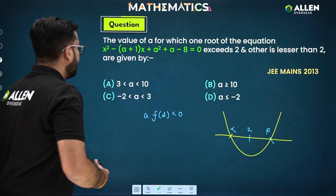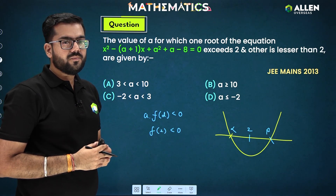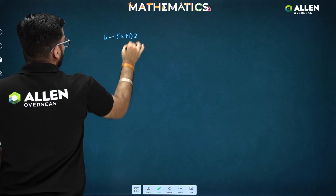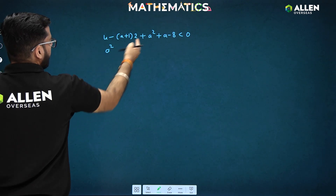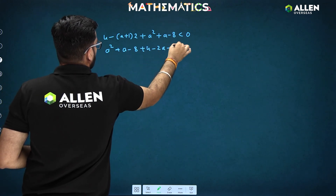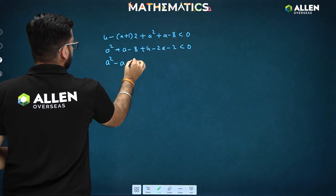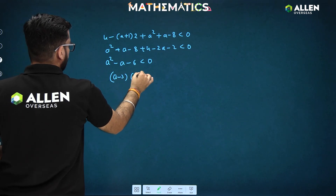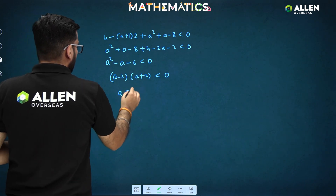Since the coefficient of x² is 1 and d = 2, we compute f(2): putting x = 2 gives 4 − (a+1)·2 + (a² + a − 8) < 0, which simplifies to a² + a − 8 + 4 − 2a − 2 < 0, giving a² − a − 6 < 0. Using mid-term splitting: (a − 3)(a + 2) < 0.